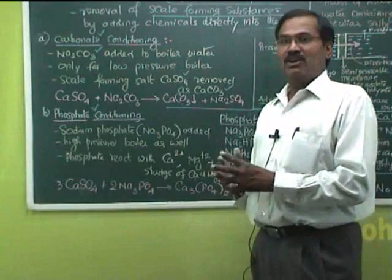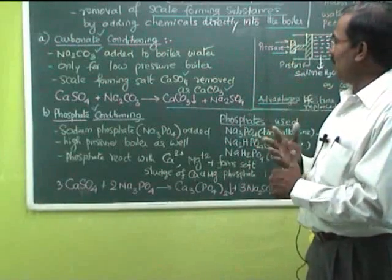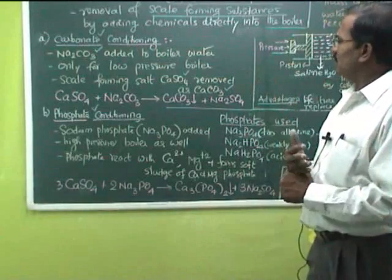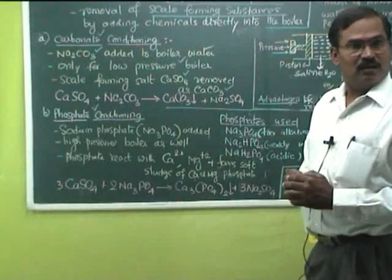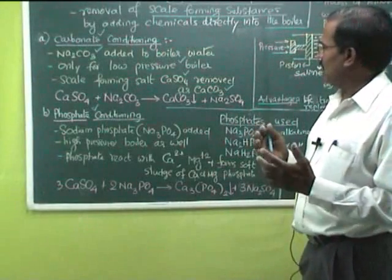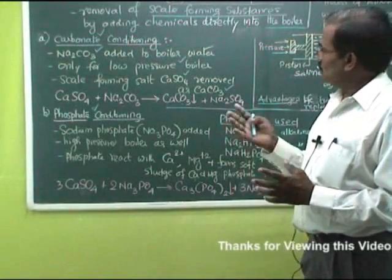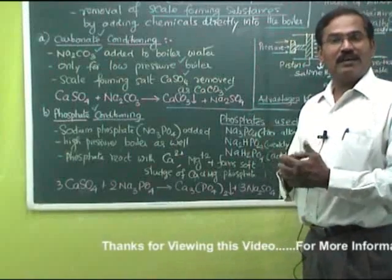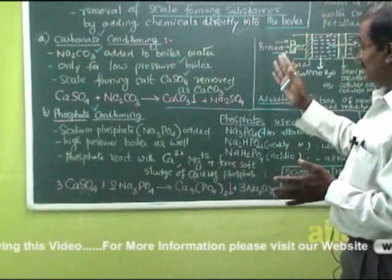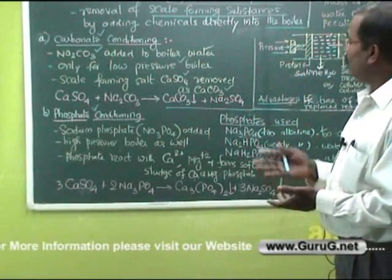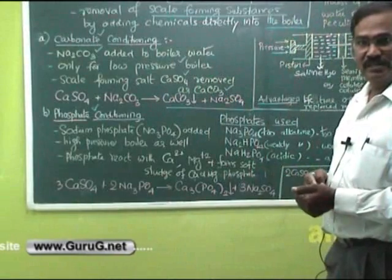Calcium carbonate can be removed readily because it is a water-insoluble precipitate. In carbonate conditioning, we are adding sodium carbonate, and this is mainly applicable for low-pressure boilers. This cannot be used for high-pressure boilers because in high-pressure boilers, sodium carbonate undergoes hydrolysis to give sodium hydroxide, which leads to caustic embrittlement. So this is applicable only for low-pressure boilers.